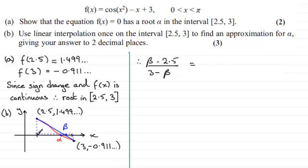So the height of this triangle will be 1.499 and so on, 1.499 and so on. And this is compared to—we've got to be careful here—this length is going to be 0.911 and so on. We don't put the minus in. Okay, so we're just comparing lengths. So it's 0.911 and so on. So just a question now of rearranging this, solving it for β.